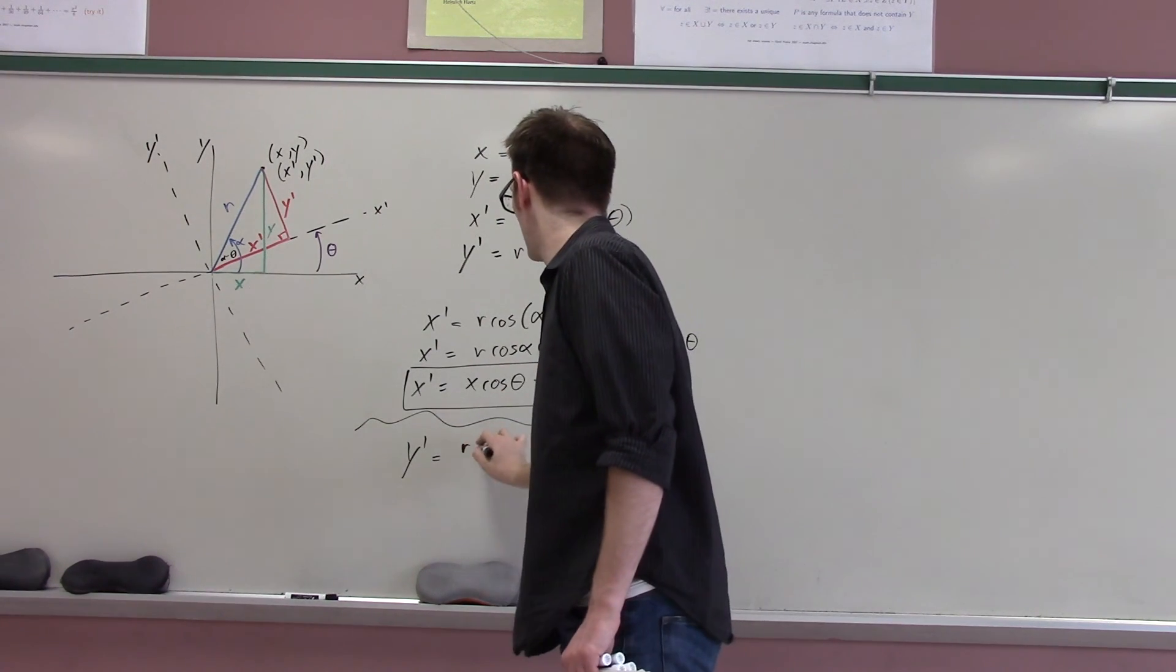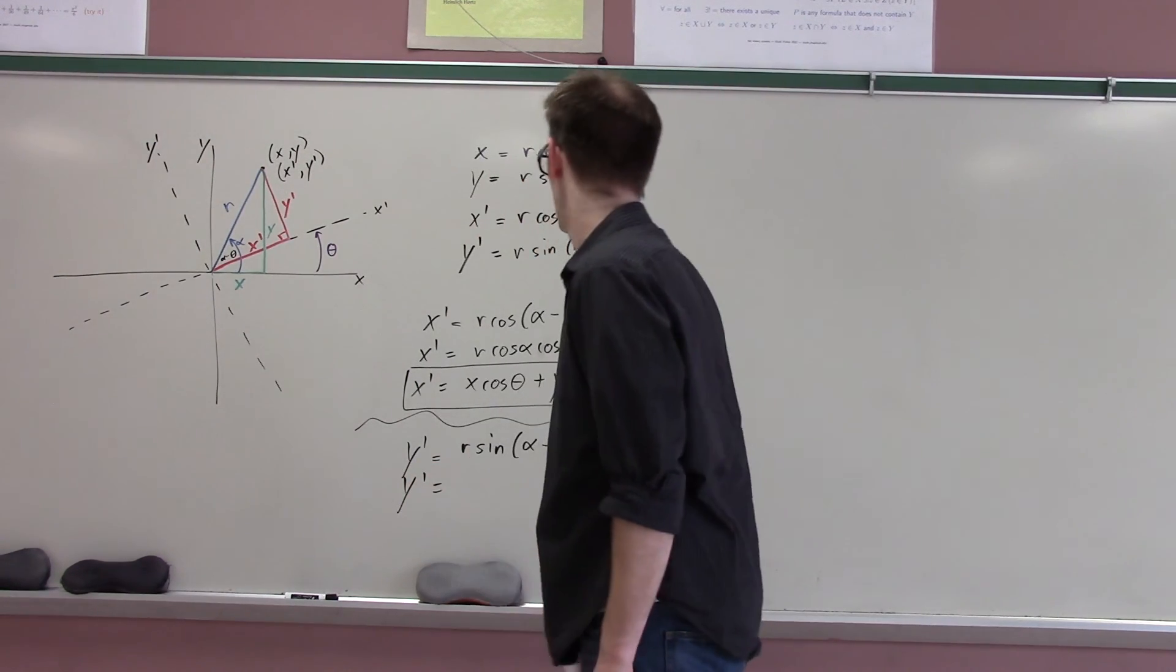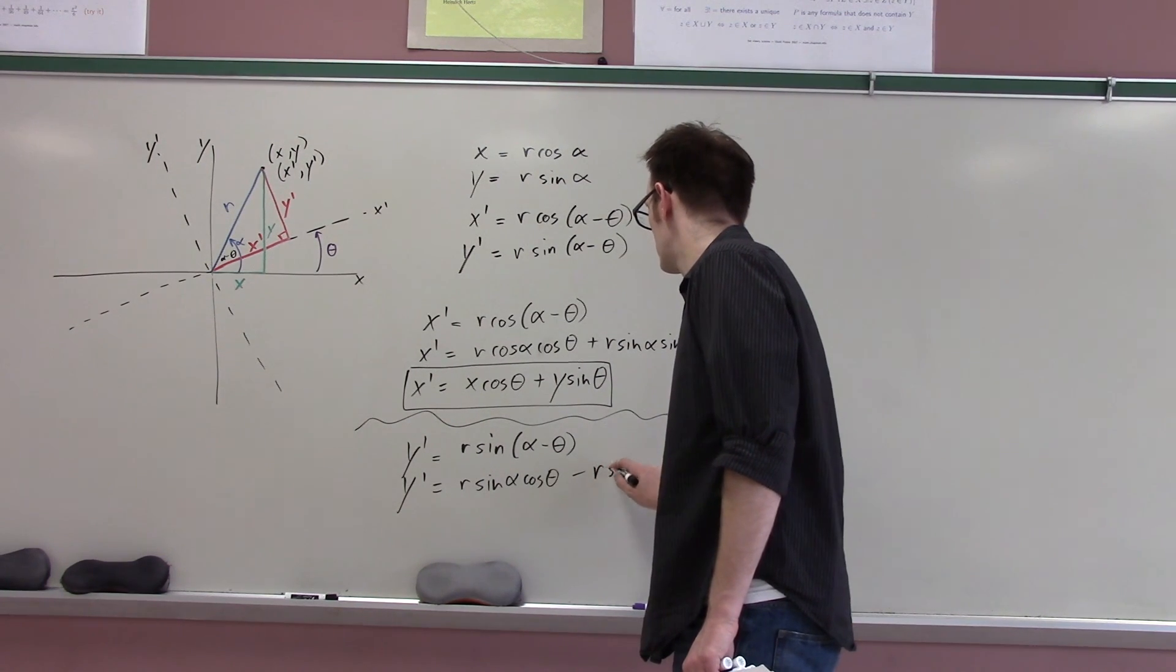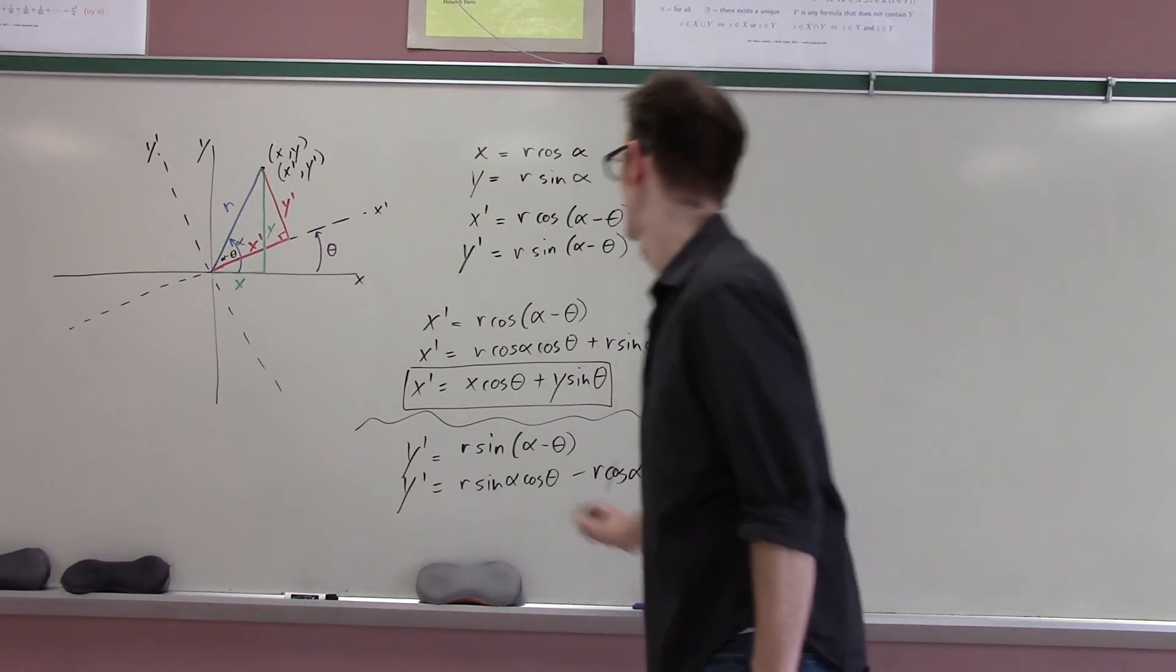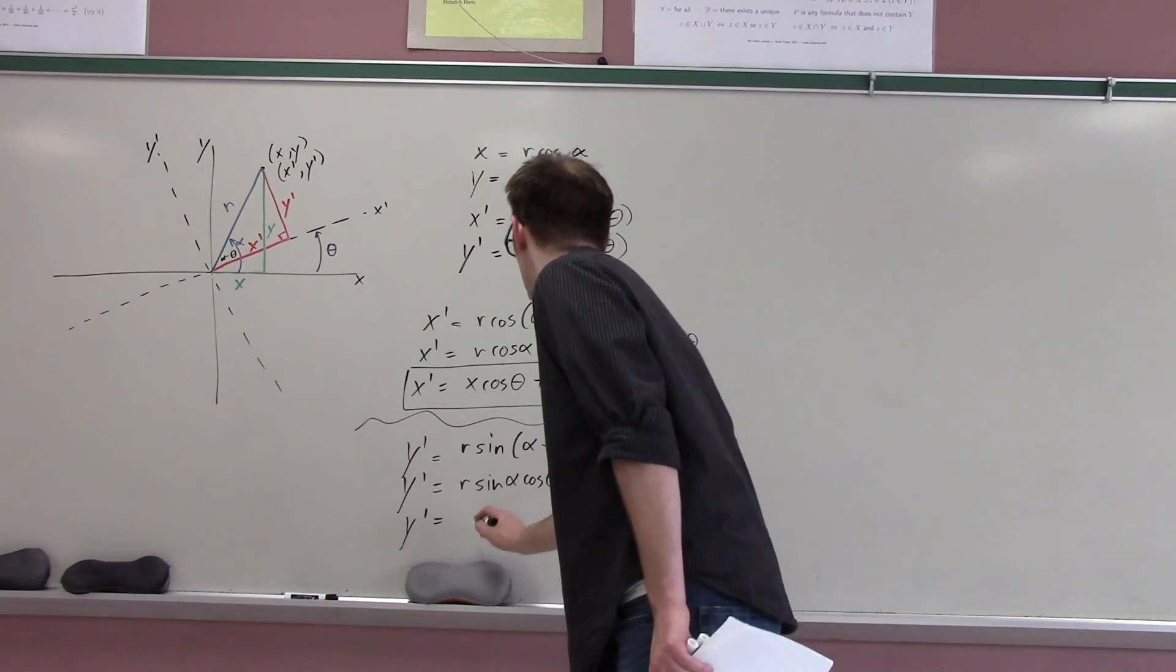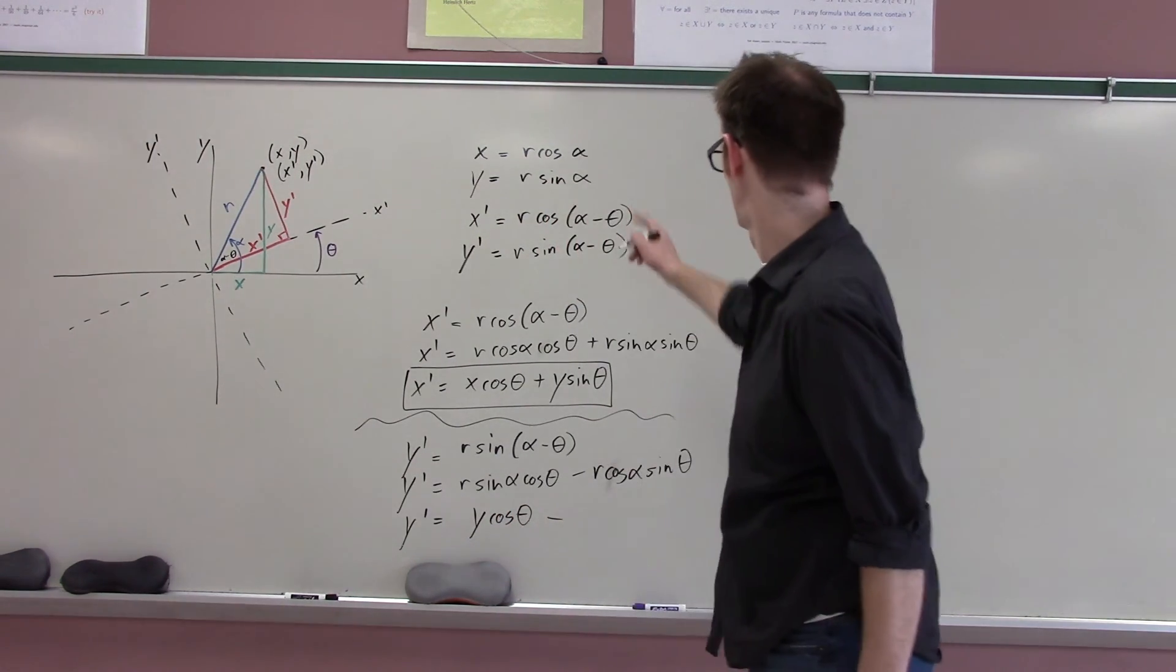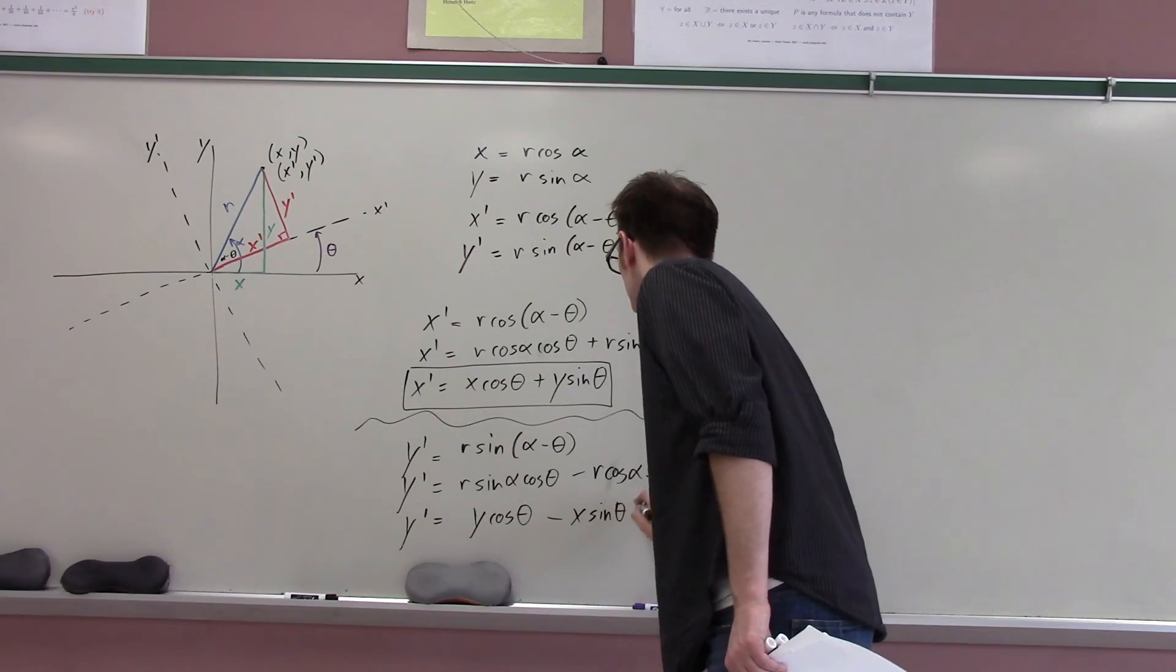And then I can just do the same thing again. And then I have my equation for y prime is going to be... Now, I'll just expand. I'll just write it again. It's r sine of alpha minus theta. And therefore, y prime is r sine alpha cosine theta minus r cosine alpha sine theta. But then we get that r sine alpha is just y. So, this is just y cosine theta. Y cosine theta. And then this is going to be minus x sine theta. Okay. Okay.